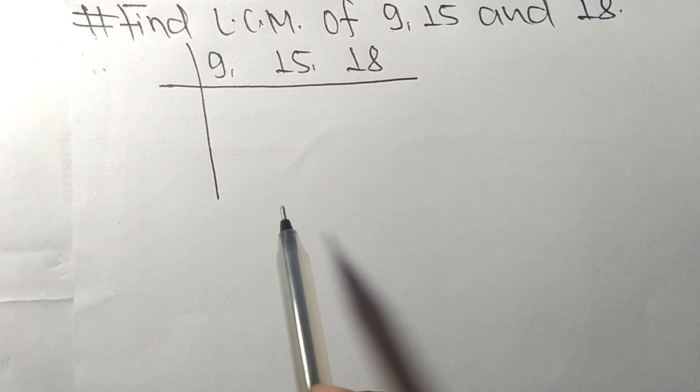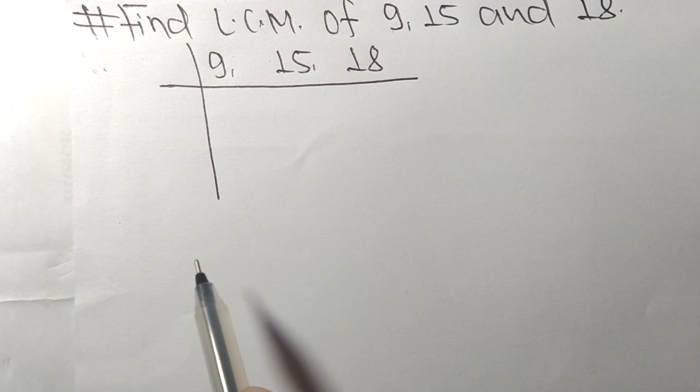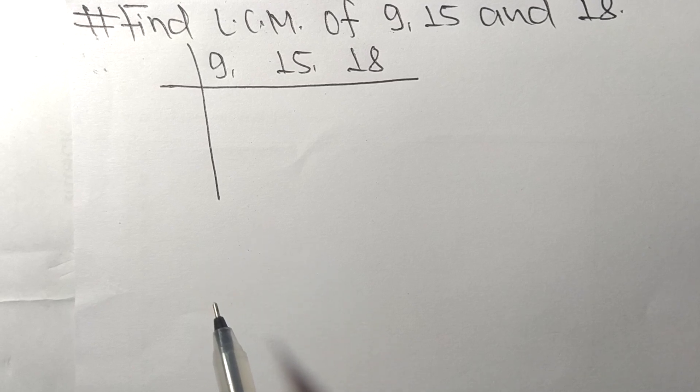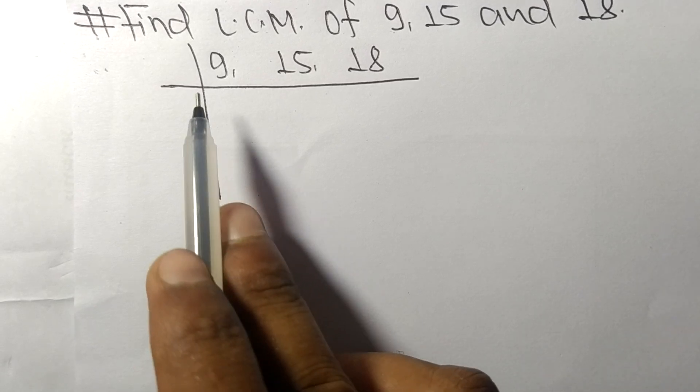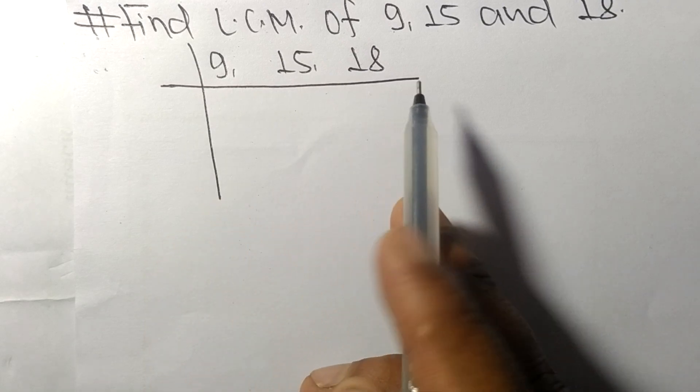So to find LCM we have to choose the lowest number that can exactly divide at least any two of these numbers.